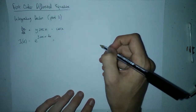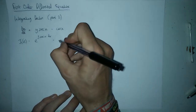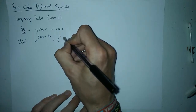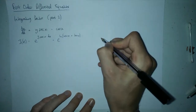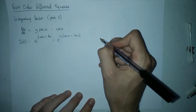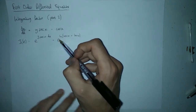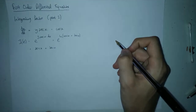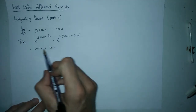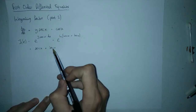We need to integrate sec x, which isn't something I just know, so I look it up and it turns out the integral of sec x is ln of (sec x + tan x). This is a horrible integral, but it's quite nice here because that ln is going to cancel the e, since they're inverse functions — like squaring and square root. So my integrating factor is sec x + tan x.